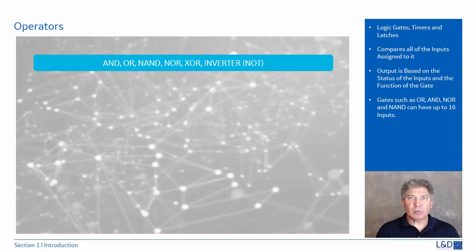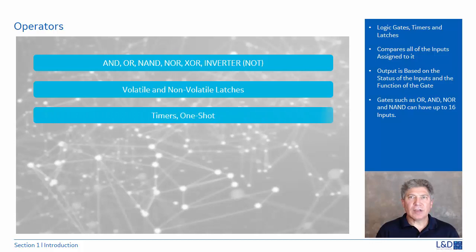The number of inputs are adjustable between 2 and 16 for the OR, AND, NOR, and NAN gates. Other operators consist of volatile and non-volatile latches, timers, and one-shots. The maximum number of one-shots in FlexLogic is 64, while the maximum number of timers is 32.